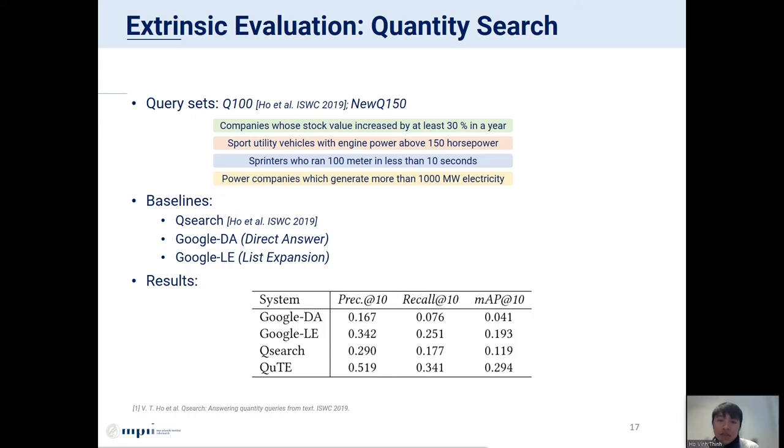For the extrinsic evaluation of quantity search, we use a set of queries from different domains like finance, sport, technology, and transport. Here, we compare our system with three baselines. The first baseline is the QSearch system from our earlier work, which supports answering quantity queries, however using data from text. The second baseline is Google direct answers using the output from Google search, and we annotate them manually. The third baseline is Google list expansion, which is similar to Google DA, except that we expand the result from Google if the page content is a list or table. The result shows that our QUTE system outperforms the baselines for answering quantity queries.